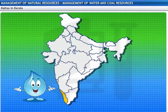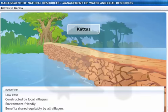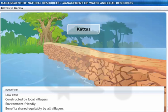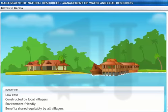Our next stop is Kerala. Local farmers here use a system of Kattas — low-cost small check dams that are constructed across small rivulets to store water. These are typically made of stones in mud and are dismantled before the monsoons arrive to prevent flooding. Also, since they are built communally, the water is shared equally by all.